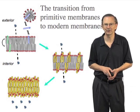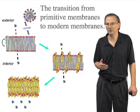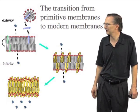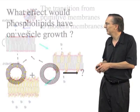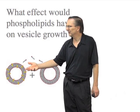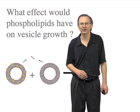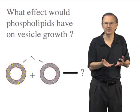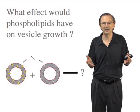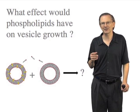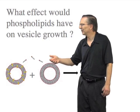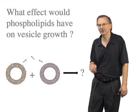The answer to this conundrum came from doing experiments, and this is all work done by Itai Buden, who is a graduate student in the lab. What Itai did was simply to prepare vesicles containing a little bit of phospholipid doped into a fatty acid membrane structure. Then he asked how that would affect the properties of the membrane.